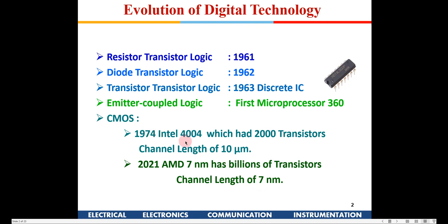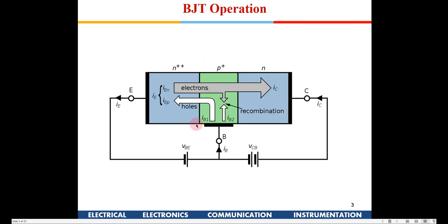Initially when CMOS came, the transistor size was 10 micrometers, and today in 2021 we have devices of 7 nanometers. CMOS has been the main market player since 1974, and although the basic principle of operation and device structure remains the same, the transistor size has immensely reduced and many architectural improvements have happened. Let's revise a little about how a BJT works.